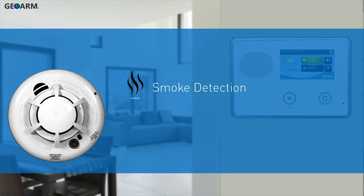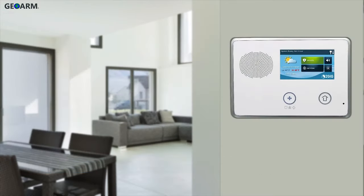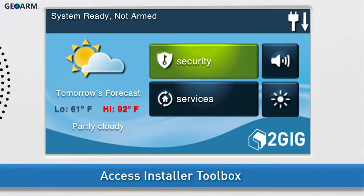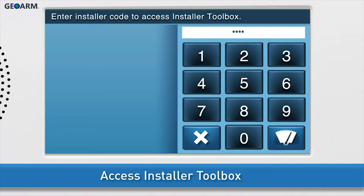To program the Smoke Detection feature into a security zone, you will first need to access the Installer Toolbox. Press the 2GIG logo on your GC2 panel screen, then enter the installer code. The default installer code for the GC2 is 1561.